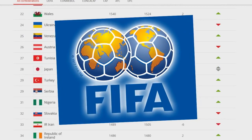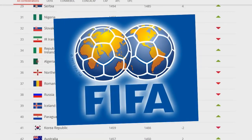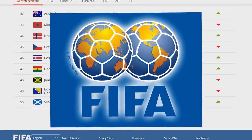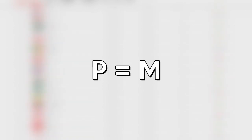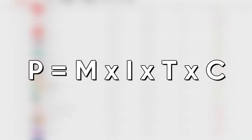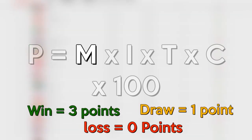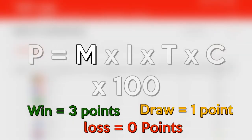FIFA uses a certain formula. The magic mathematical formula used by FIFA is: P equals M times I times T times C times 100. M is the points a team wins after the end of a specific game — if it's a win, they get 3 points; if it's a draw, they get 1 point; and if it's a loss, it's 0 points.